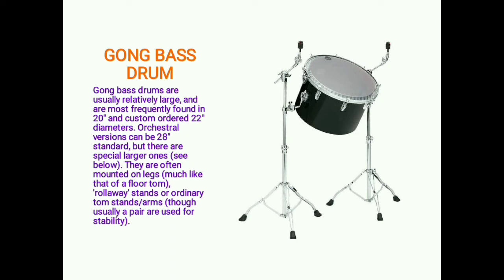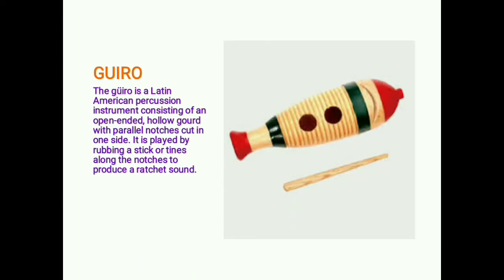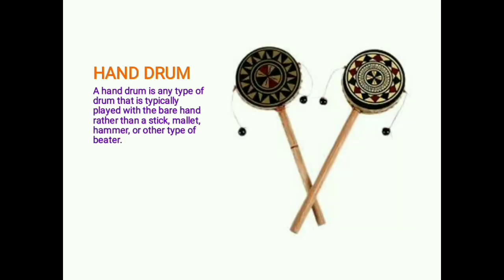Gong bass drums are usually relatively large and are most frequently found in 20- and custom-order 22-inch diameters; orchestral versions can be 28 inches standard, with special larger ones available. They are often mounted on legs. The guiro is a Latin American percussion instrument consisting of an open-ended hollow gourd with parallel notches cut in one side. It is played by rubbing a stick or tines along the notches to produce a ratchet sound. A hand drum is any type of drum typically played with the bare hand rather than a stick, mallet, or other type of beater.